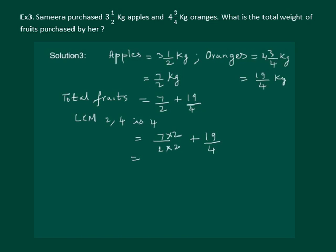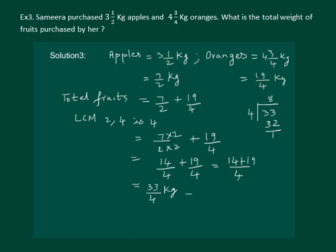We can do that by multiplying it by 2, and the second fraction remains the same as it already has denominator as LCM. We get 14 by 4 plus 19 by 4. Now we can add them, which is equal to 33 by 4 kgs. We can either leave the answer here, or it is better to convert it into a mixed fraction. We divide the numerator by denominator and get answer as 8 and 1 by 4 kg.